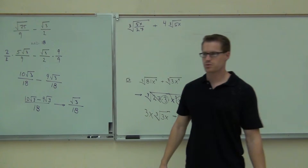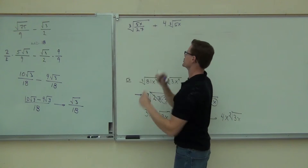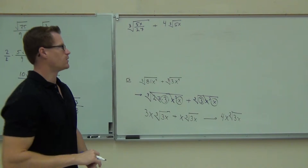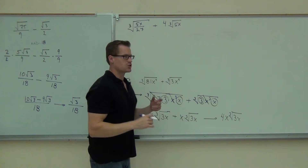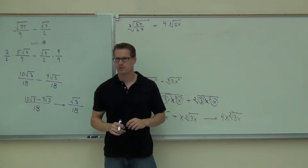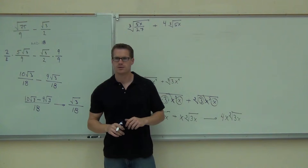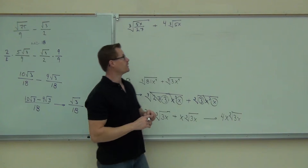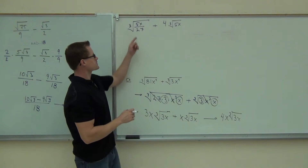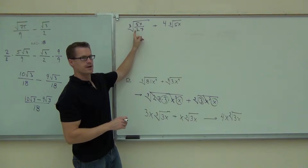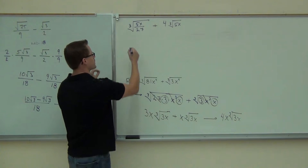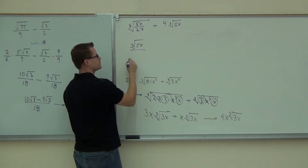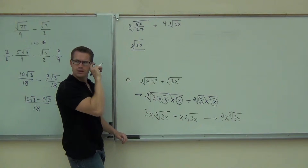Cube root of 5x over 27 — that's one cube root of a fraction — plus 4 cube root of 5x. What do we do now? First, do I even have two fractions here? Kind of — the second term is 5x over 1. This looks like a fraction. I know that with this I can break it up as a cube root of 5x over the cube root of 27.